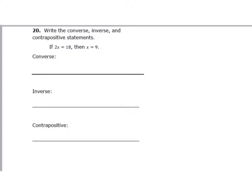Remember, the converse means we switch our hypothesis with our conclusion. So I want to start with the second half: if x equals 9, then 2x equals 18. You can see that I switched my hypothesis and moved it to the back, and my conclusion is now in the front.